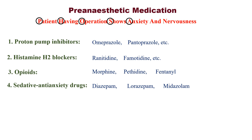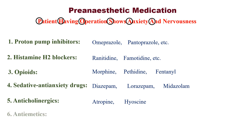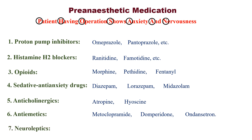A for anticholinergics — examples: atropine, hyoscine. And one more A for antiemetics — examples: metoclopramide, domperidone, ondansetron. And N for neuroleptics — examples: chlorpromazine, trifluoperazine, haloperidol.